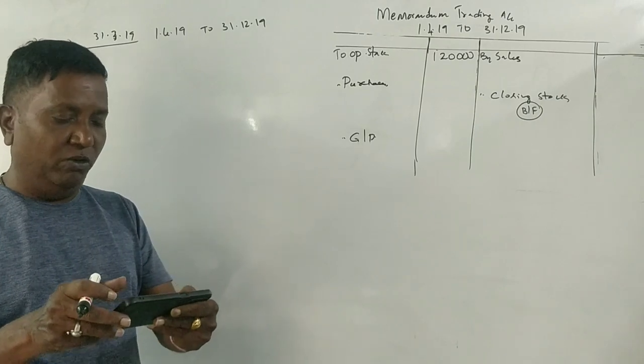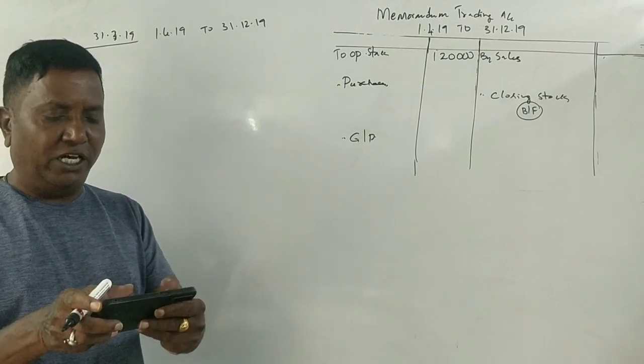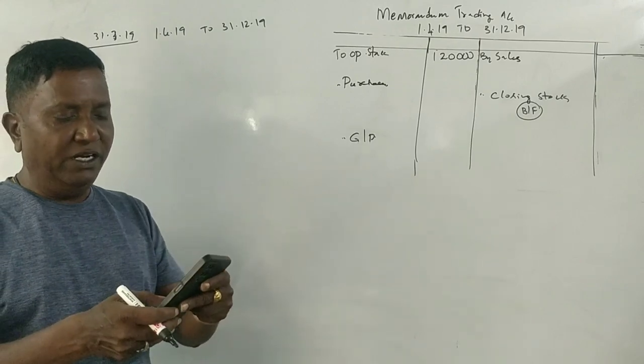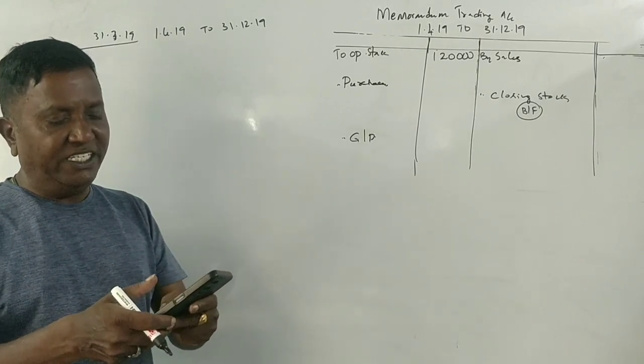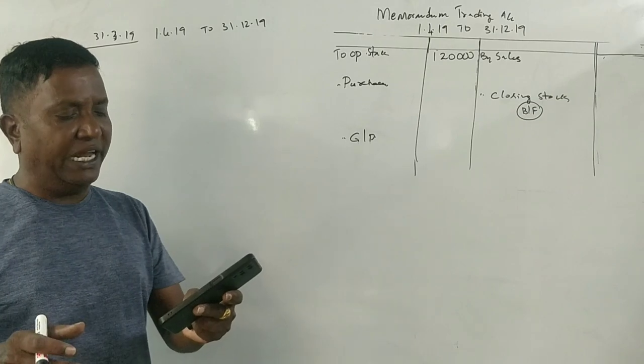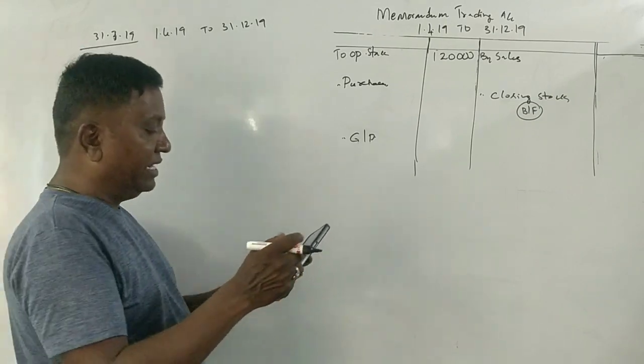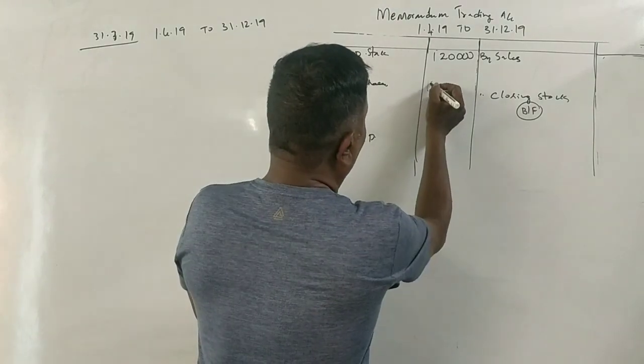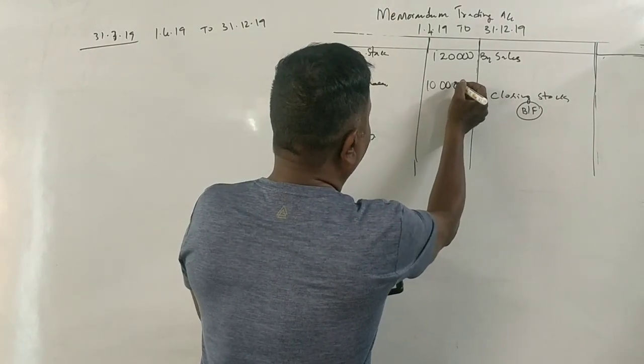Cash received from debtors - that's an important figure. Purchases from 1-4-2019 to 31-12-2019 is 10,00,000 rupees. That amount should be reduced from purchases.